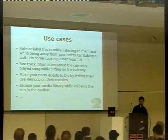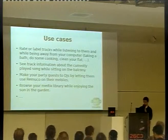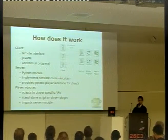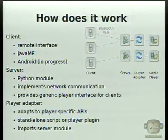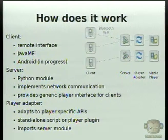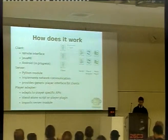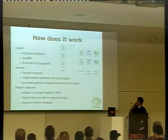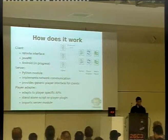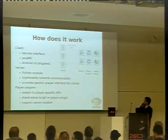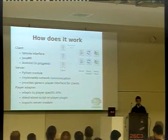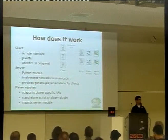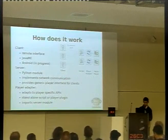Currently, these are the use cases: you can rate or label tracks, you can see track information, you can let everyone else control your media player if you trust them enough, and you can browse your media library while enjoying the sun in the garden. Maybe in Berlin that's not really useful because it's cold all the time. How does it work? You have a client with a Java ME-enabled program, and Android is in the works. You connect via Bluetooth or Wi-Fi, and on the server side it's Python, so it's comfortable to program. We're implementing network communication with a generic player interface, so all you have to do is create your own player adapter if you're not currently supported by Remuco.